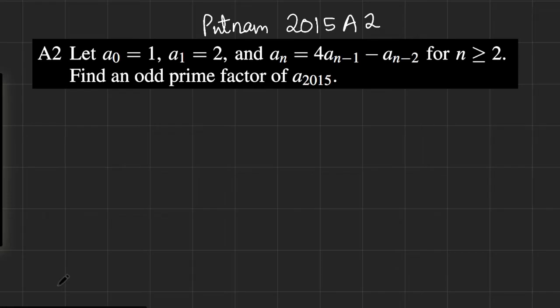Hi, today we're going to be going over A2 of Putnam 2015. This problem asks us, if we have this recurrence relation, A_n equals 4A_{n-1} minus A_{n-2} with A_0 equals 1 and A_1 equals 2, find an odd prime factor, so a prime factor other than 2, of A_2015.